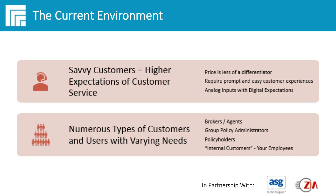As a company, you might have multiple customer types to serve: your distribution network — brokers and agents — are considered customers with specific needs; your traditional end users such as group policy administrators or policyholders; and your internal customers. You have an aging workforce used to certain technologies and a newer workforce that wants to interact with technology in very specific ways. Being able to meet the needs of your internal customers is very important as well.